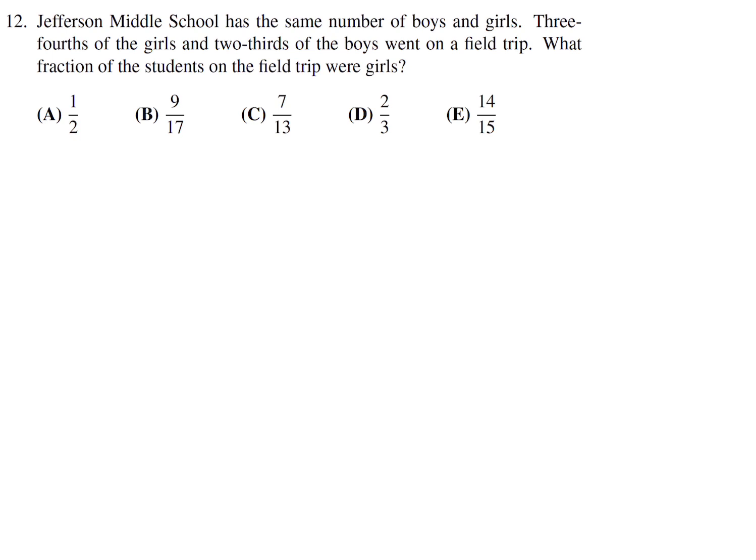Jefferson Middle School has the same number of boys and girls. Three-fourths of the girls and two-thirds of the boys went on a field trip. What fraction of the students on the field trip were girls? The number of boys equals the number of girls. 3 over 4 times G plus 2 over 3 times B is the number of students that went on a field trip.